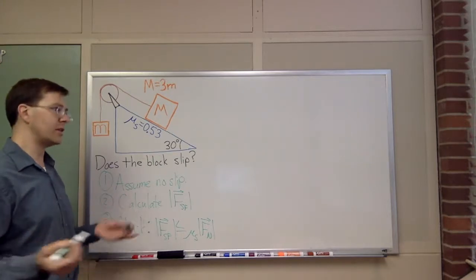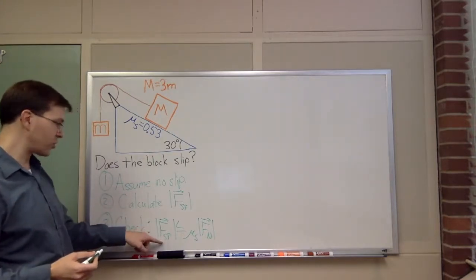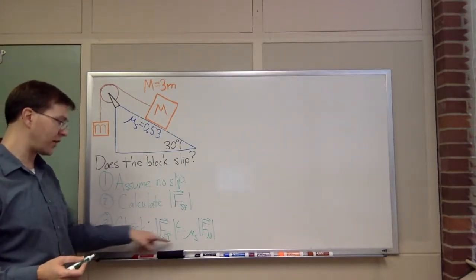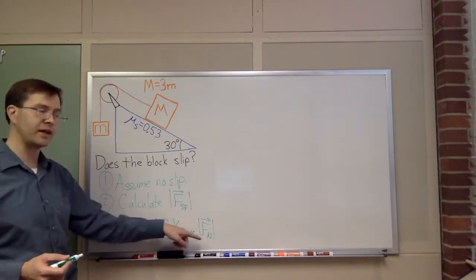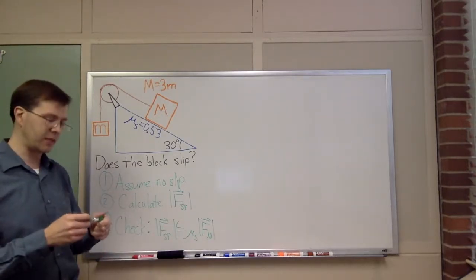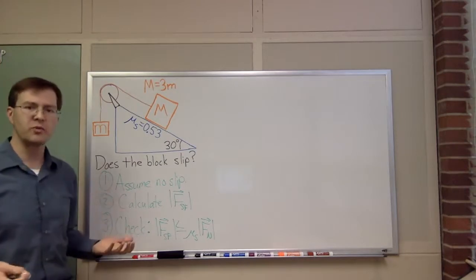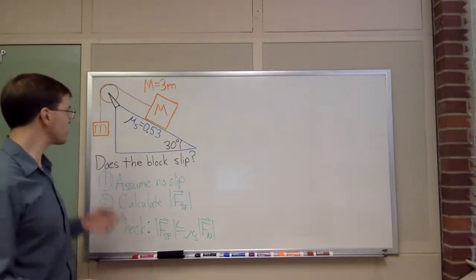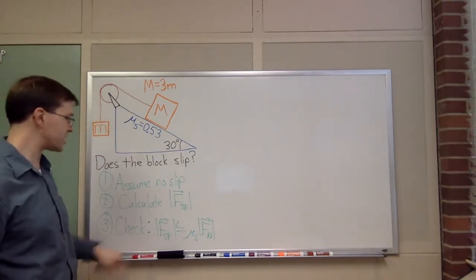If the force we need to keep it from slipping is greater than mu_s times the normal force, that means we'll know that it's going to slip. So this is a force problem with two separate pieces, two systems, and that tells me I want to draw free body diagrams for these systems.